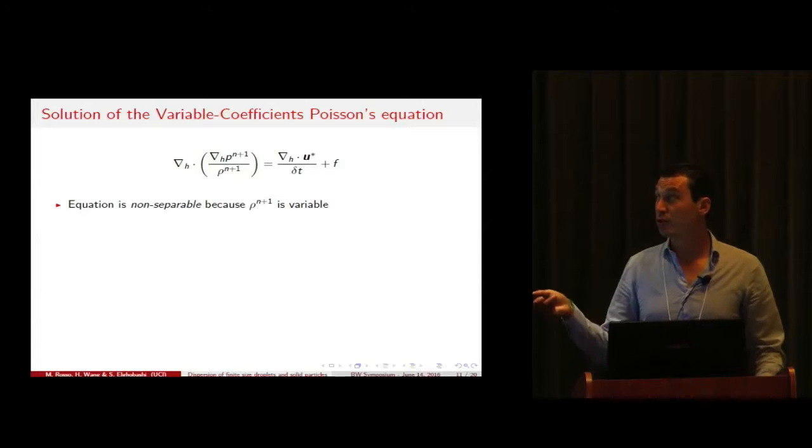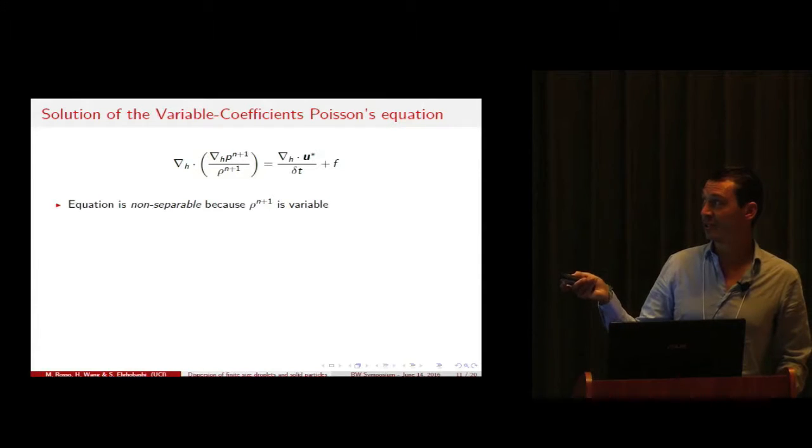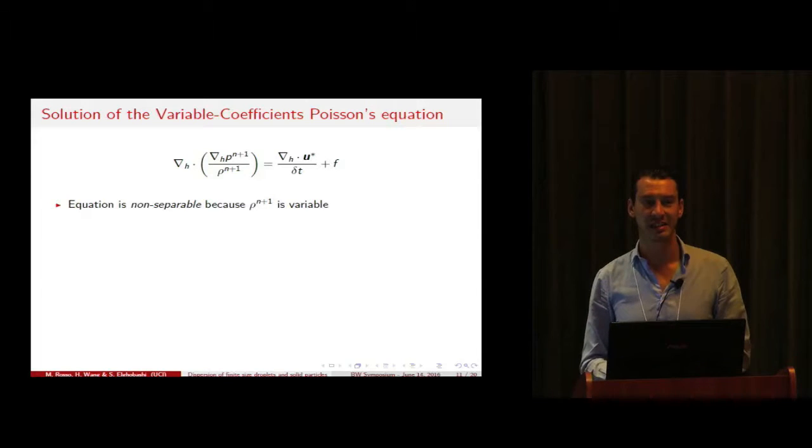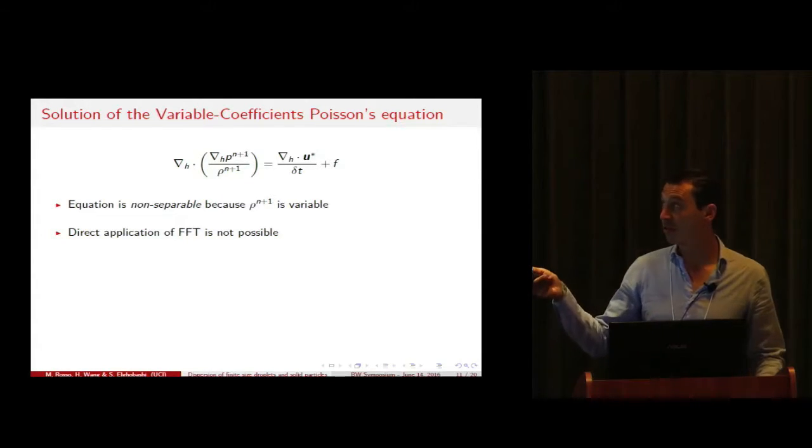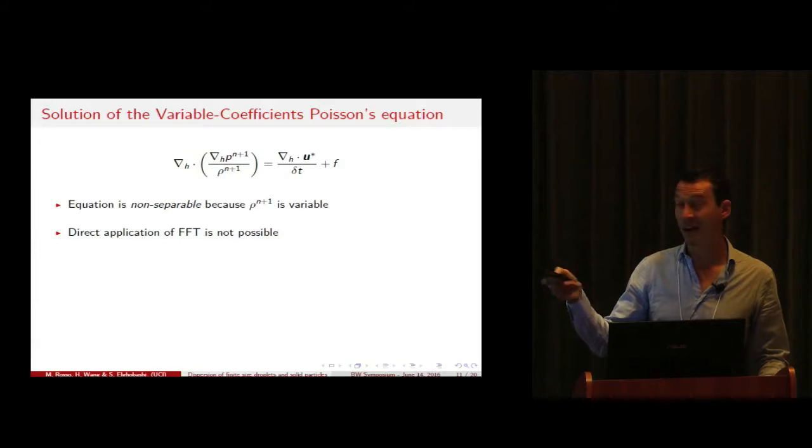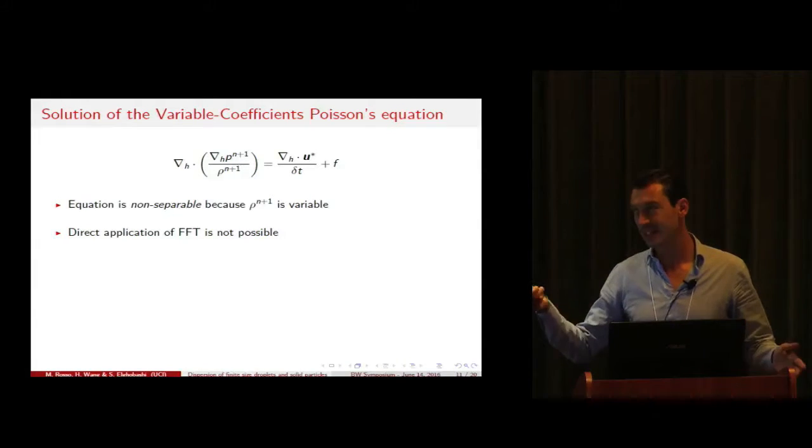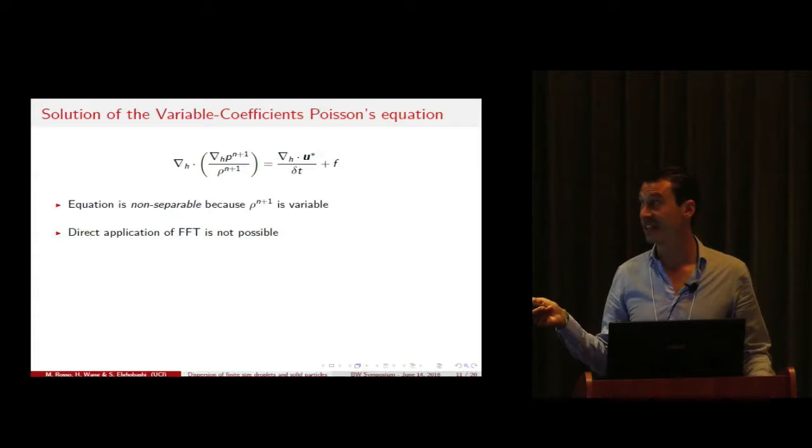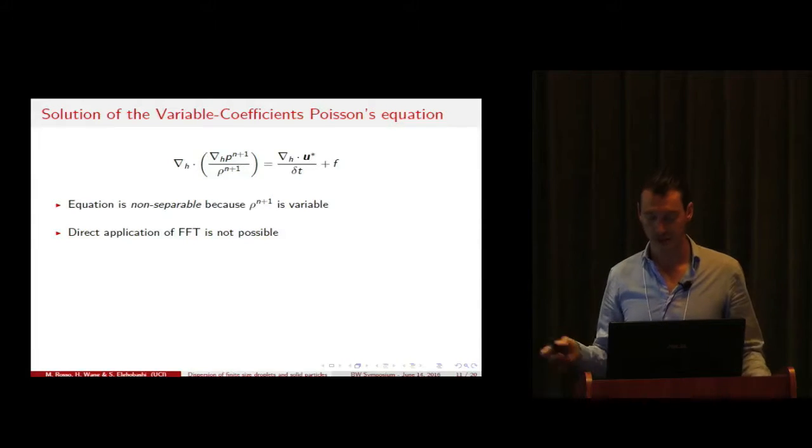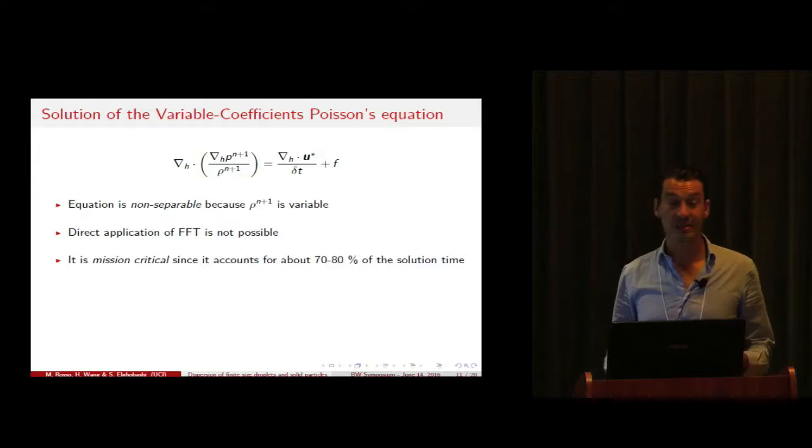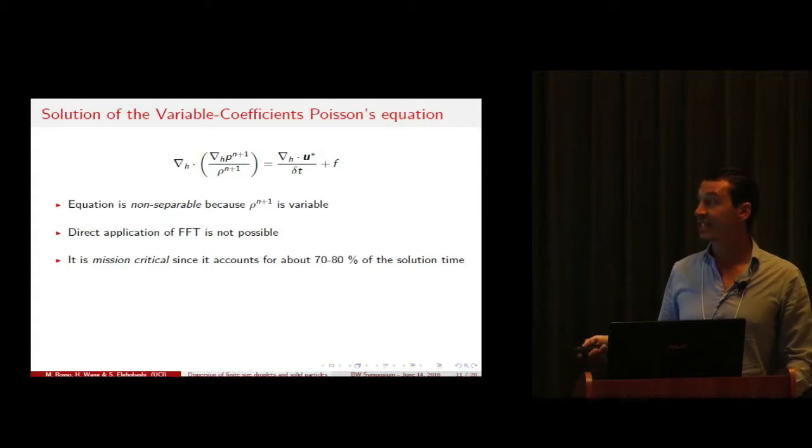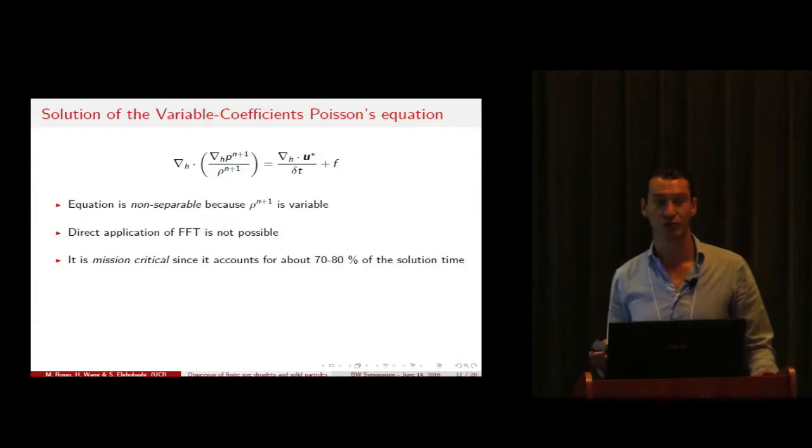The solution of the variable coefficient Poisson equation is the bottleneck. First because it's non-separable since rho is variable with space and time and also singular at the interface. Therefore direct application of FFT is not possible. Also it's mission critical since it accounts for about 70-80% of the solution time.